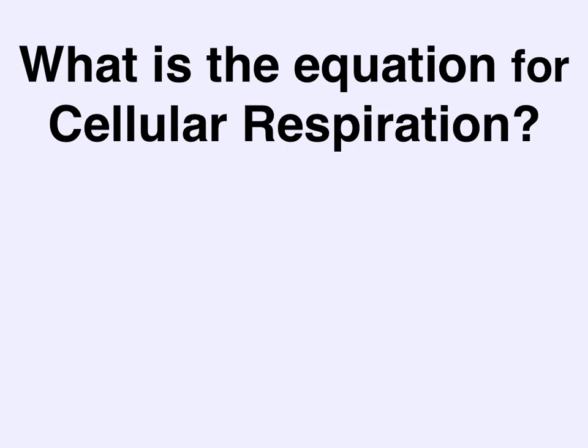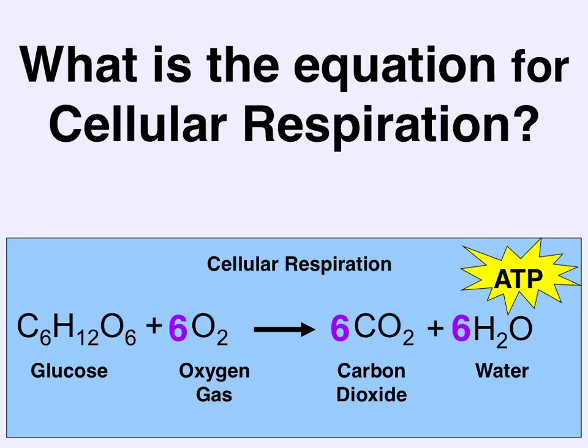What is the equation for cellular respiration? Just as I had to remember the equation for photosynthesis, I also want you to remember the equation for cellular respiration. The purpose of cellular respiration is to turn the energy stored in glucose into a bunch of ATP. And when oxygen is present, the mitochondria can do that very well. Glucose plus oxygen gas produces carbon dioxide, water, and ATP.